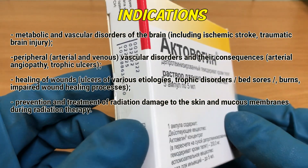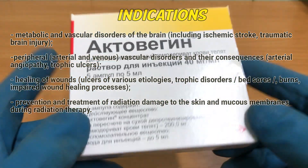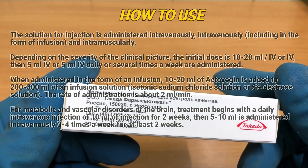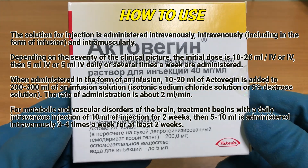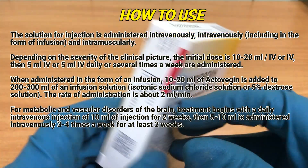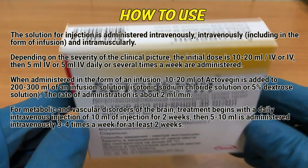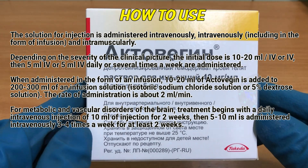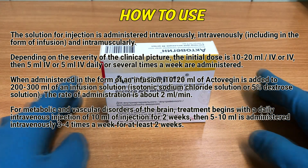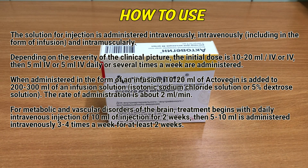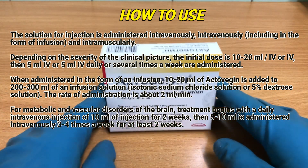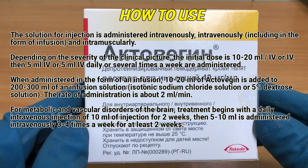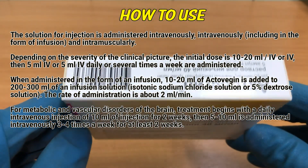Additional indications include prevention and treatment of radiation damage to the skin and mucous membranes during radiation therapy. The solution for injection is administered intravenously, intravenously as an infusion, and intramuscularly. When administered as an infusion, 10 to 20 mL of Activision is added to 200 to 300 mL of an infusion solution — isotonic sodium chloride solution or 5% dextrose solution.